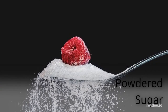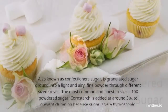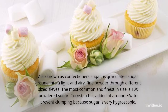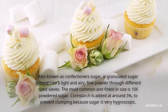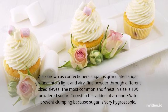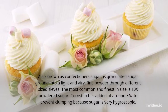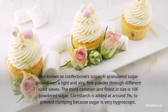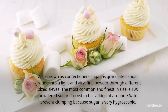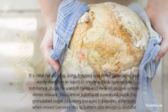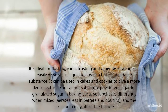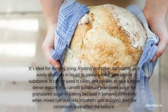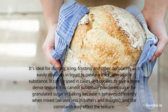Powdered sugar, also known as confectioner's sugar, is granulated sugar ground into a light and airy fine powder through different sized sieves. The most common and finest in size is 10x powdered sugar. Corn starch is added at around 3% to prevent clumping because sugar is very hygroscopic. It's ideal for dusting, icing, frosting, and other decorating, as it easily dissolves in liquid to create a thick, spreadable substance.